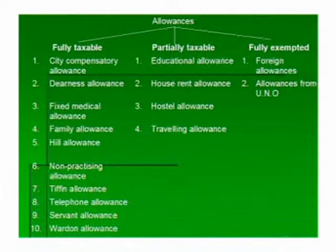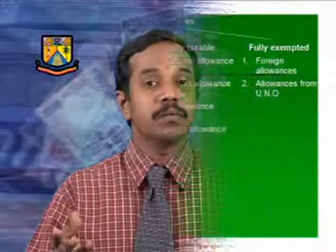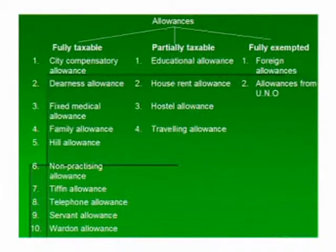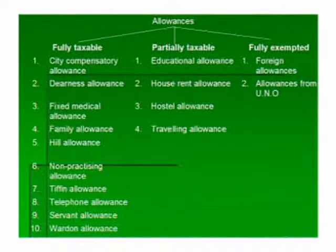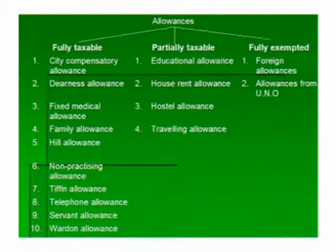First, allowances which are fully taxable — it means no amount can be claimed as exempt. Examples include city compensatory allowance, dearness allowance, family allowance, fixed medical allowance, hill allowance, non-practicing allowance, servant allowance, and warden allowance. These are all fully taxable irrespective of the assessee and irrespective of the employer.